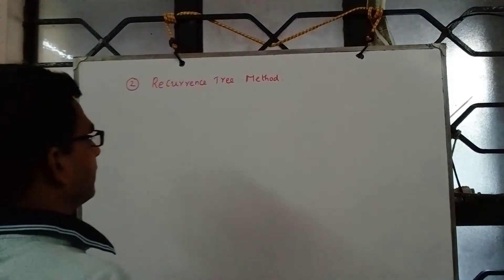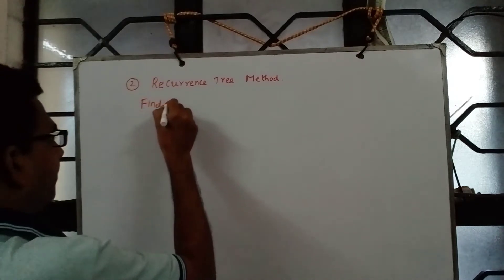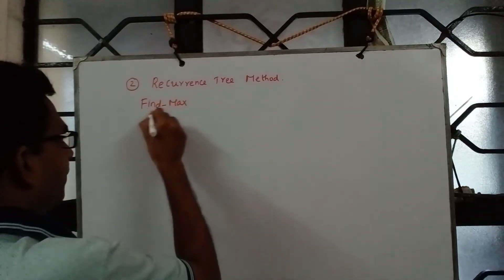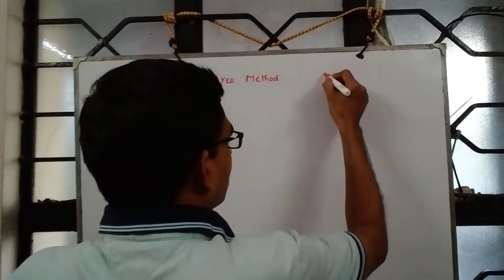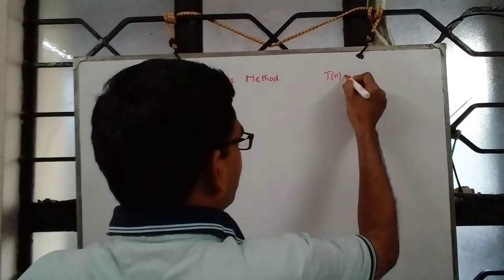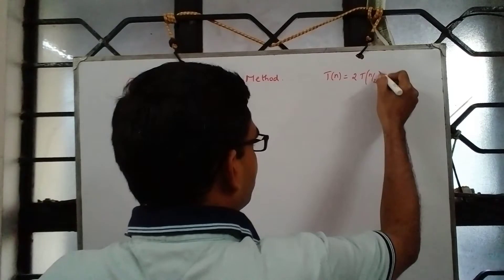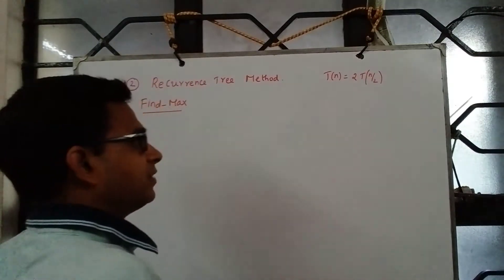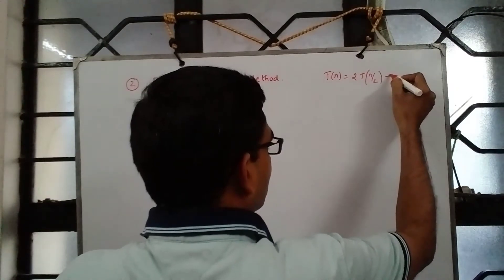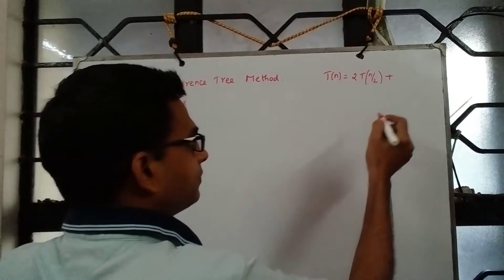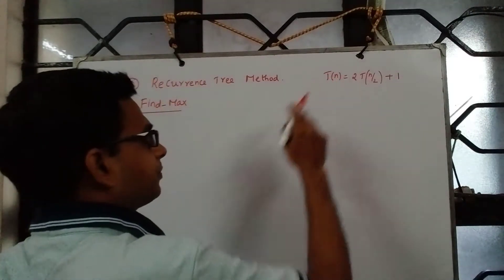We shall next look at the FindMax case study. It says we divide T(n) into two subproblems each of size n/2, which we solve recursively, and when we get the max from the two subproblems we make one comparison and return max for this subproblem.